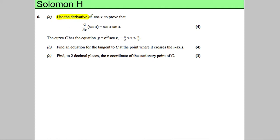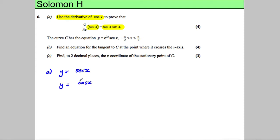In this question we use the derivative of cosine X to prove that the differential of sec X is sec X tan X. This is a standard proof you should learn. For part A, we set y equal to sec X, which is defined as cos X to the power of negative 1, because sec is 1 over cos. So dy/dx using the chain rule: we bring down the power of negative 1 and differentiate cosine, which gives negative sine X.